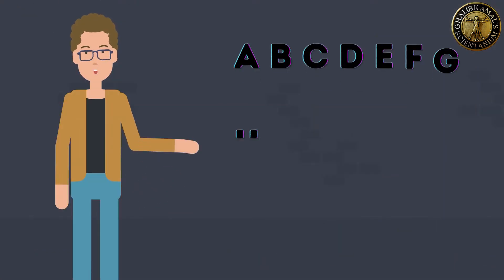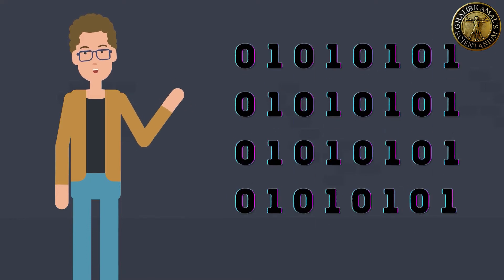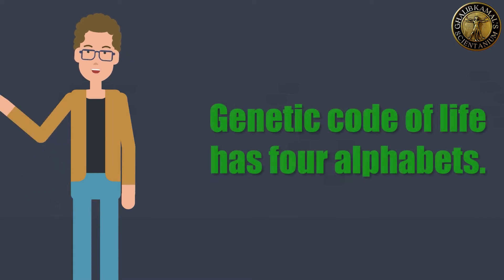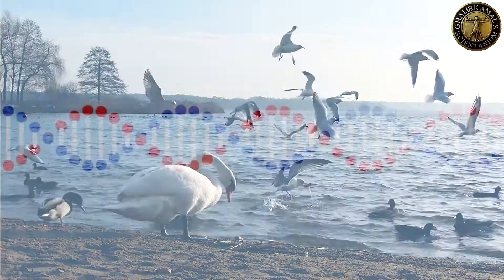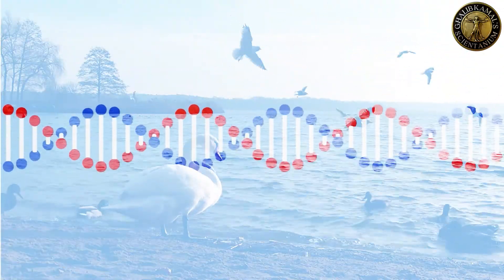English has 26 alphabets. Binary system has only two, one and zero. But the genetic code of life has four alphabets. Every living organism on this planet has DNA in its cells, which is the recipe for every organism.